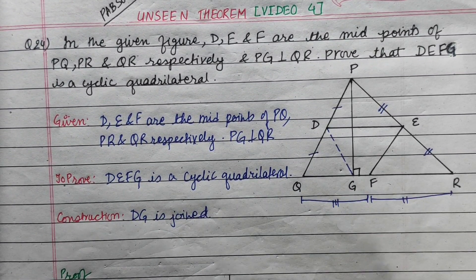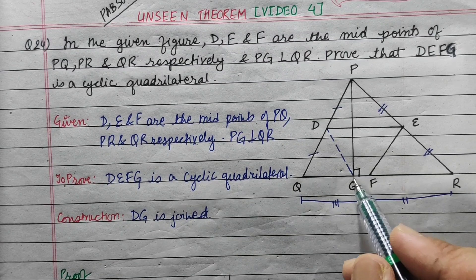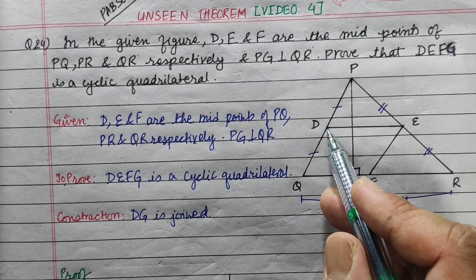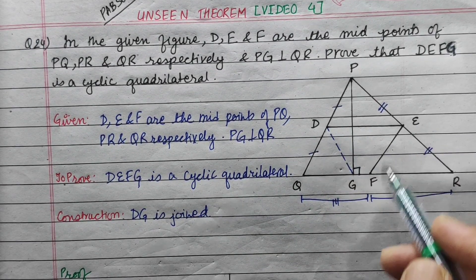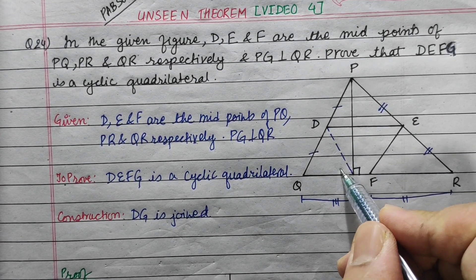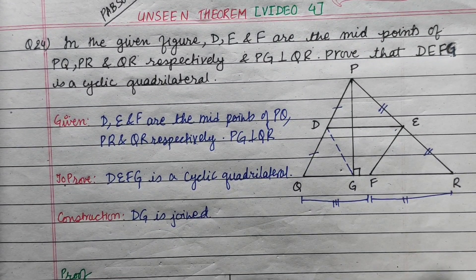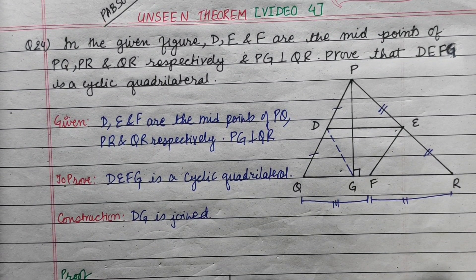If you look at PG perpendicular to QR, we can see that DEFG is a cyclic quadrilateral. To prove DEFG is a cyclic quadrilateral, we need to show that the exterior angle DGQ is equal to the interior opposite angle DEF.